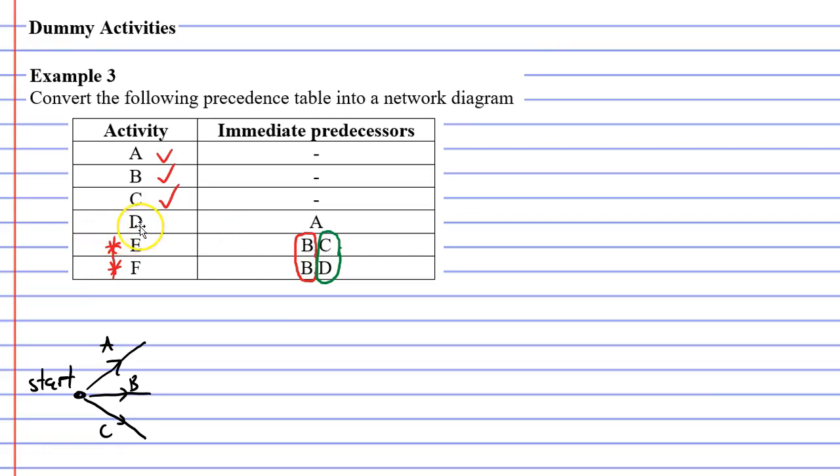Now looking at activity D, it comes after activity A. So we need to complete activity A with a vertex, and then activity D comes out from that point. So we'll tick off activity D.